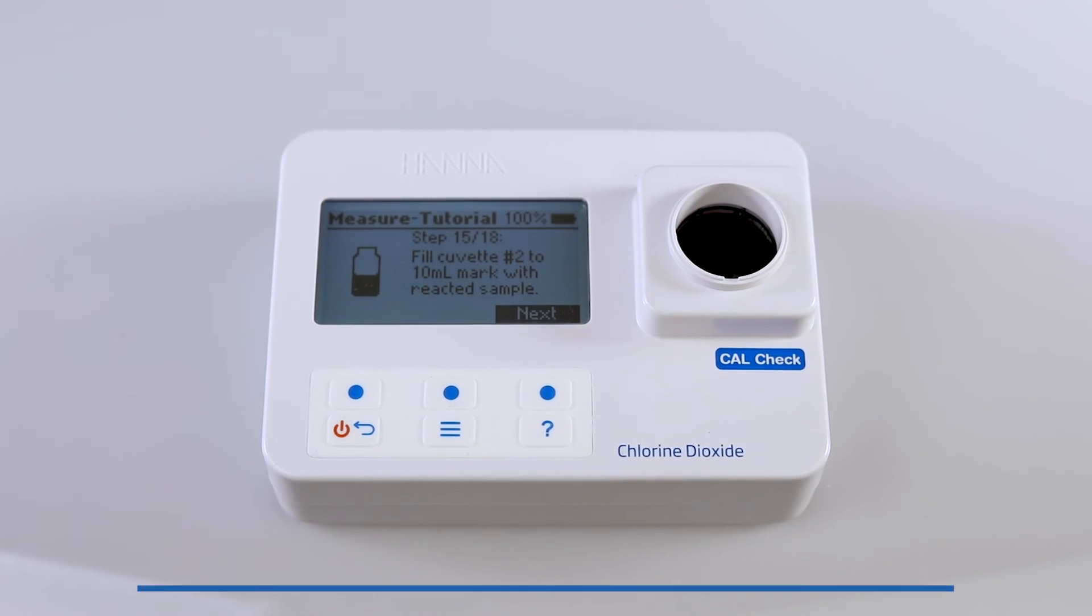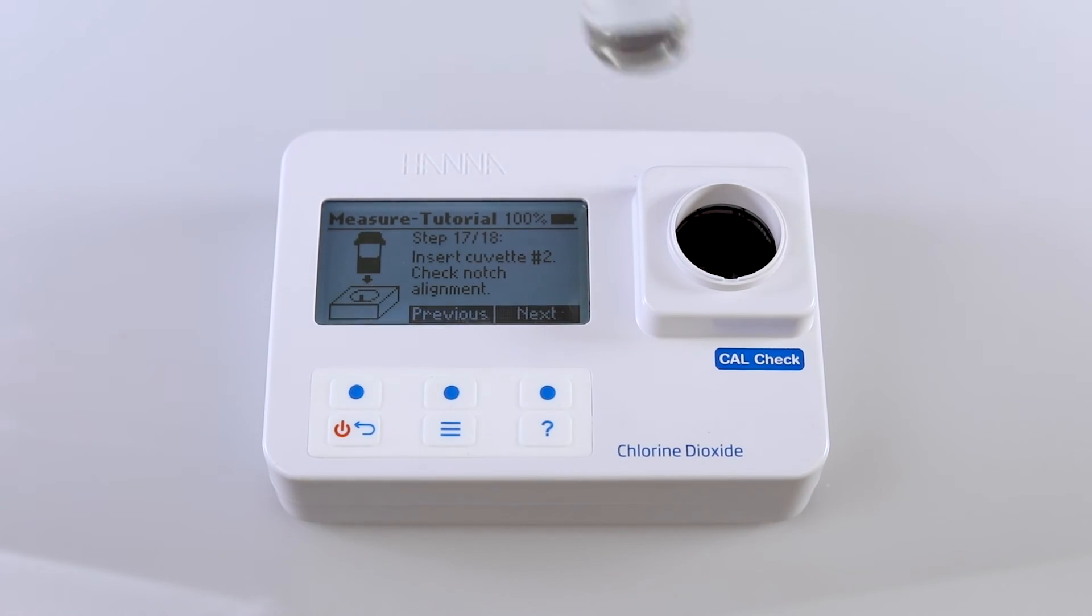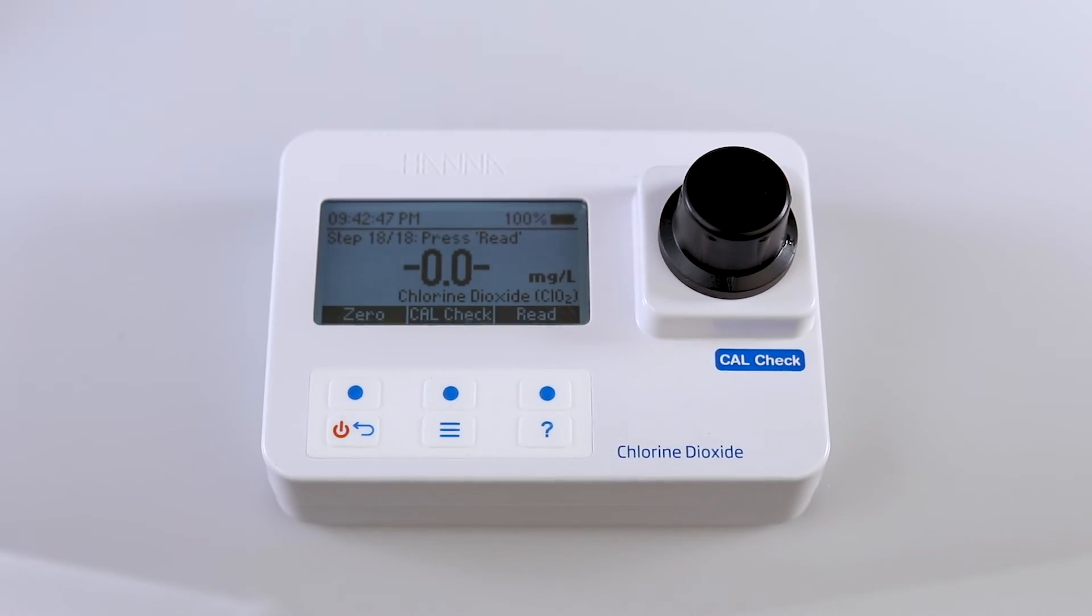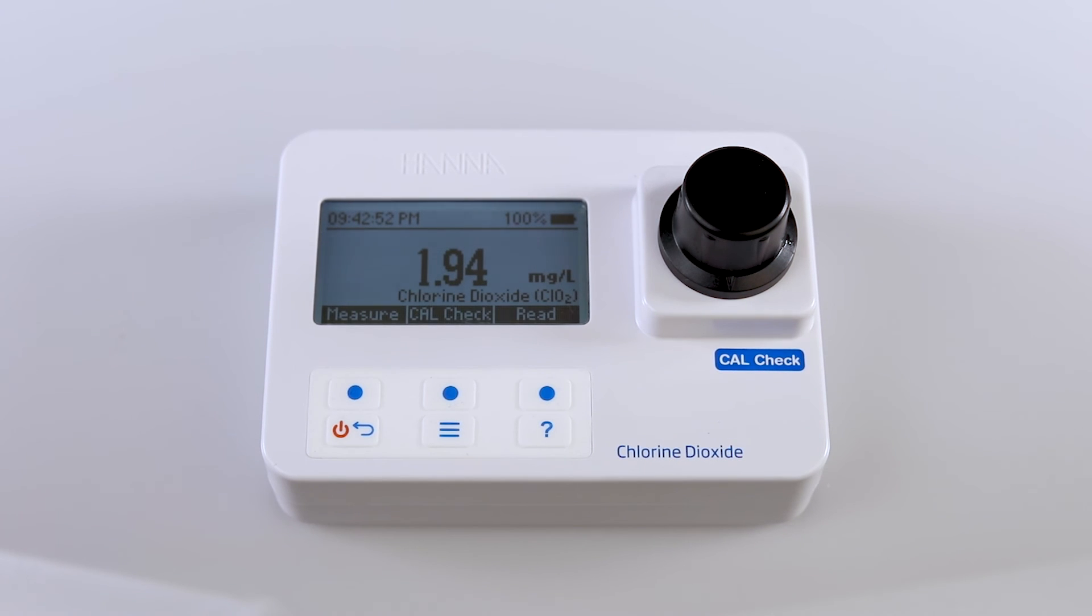Next, fill your second cuvette to the 10 milliliter mark with your reacted sample. Replace the stopper and cap, wipe the cuvette, and insert the cuvette into the holder. Press read to start the reading. The instrument will display the results in milligrams per liter of chlorine dioxide.